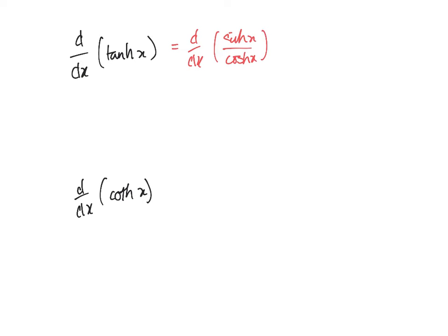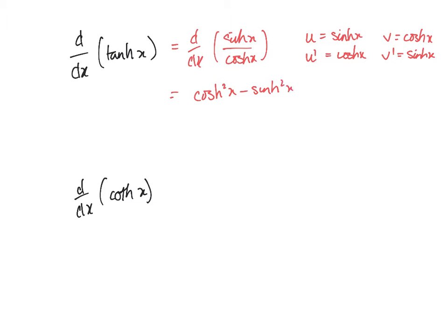If we say that u in that quotient is sinh ax, then u dash is cosh ax — we know that when we differentiate sinh we get cosh. And v is the denominator, cosh ax, so v dash is sinh ax when we differentiate cosh. Applying the quotient rule: v du/dx is cosh squared x, minus u dv/dx gives sinh squared x, all over v squared which is cosh squared x. We know that cosh squared x minus sinh squared x equals one, so we get one over cosh squared x, which by definition is sech squared x. That's the proof of the result we saw on the previous page.